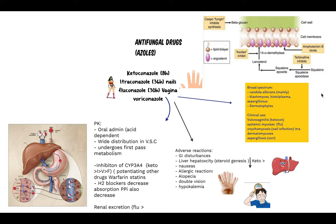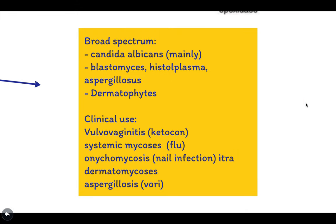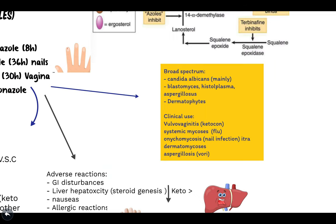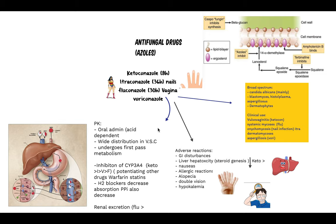Azoles have a broad antifungal spectrum, covering mainly Candida albicans, as well as Blastomyces, Histoplasma, Aspergillosis, and dermatophytes. Clinical uses include vulvovaginitis treated by ketoconazole, systemic mycosis by fluconazole, onychomycosis (nail infection) by itraconazole, and aspergillosis by voriconazole. The main pharmacokinetics: they are usually taken orally with wide distribution in the vagina, skin, and CNS. Fluconazole is the most potent in CNS penetration, hence why it treats systemic mycosis. All other azoles can also be used.